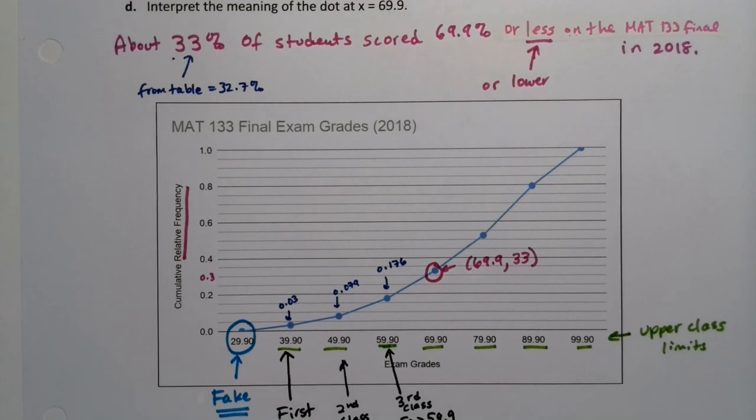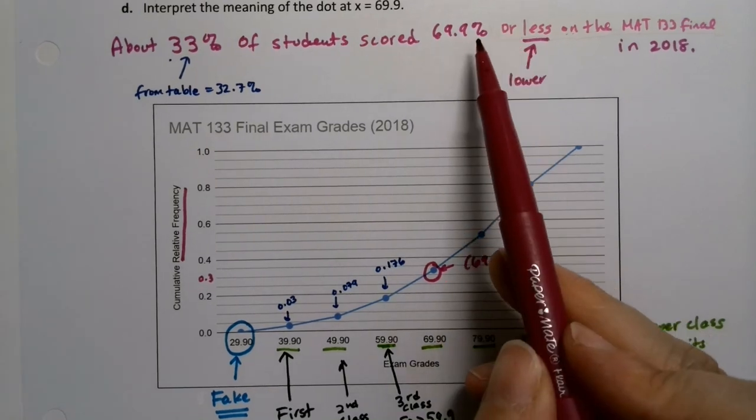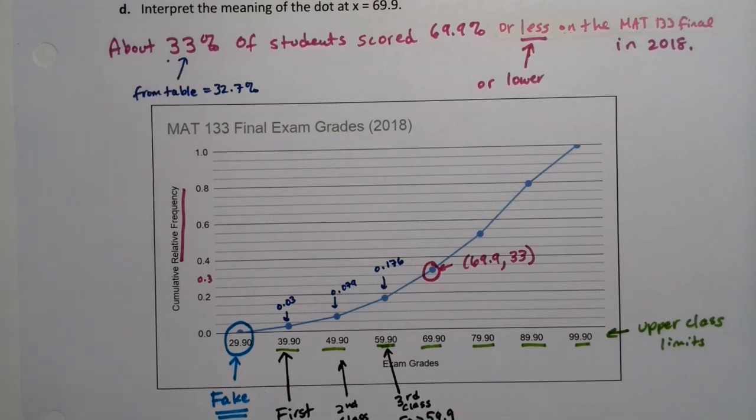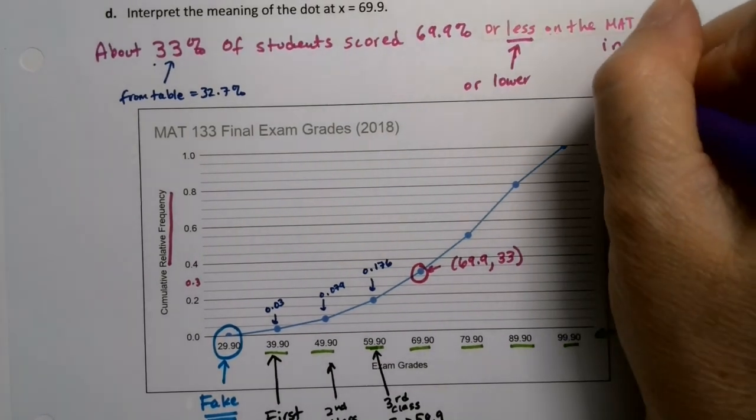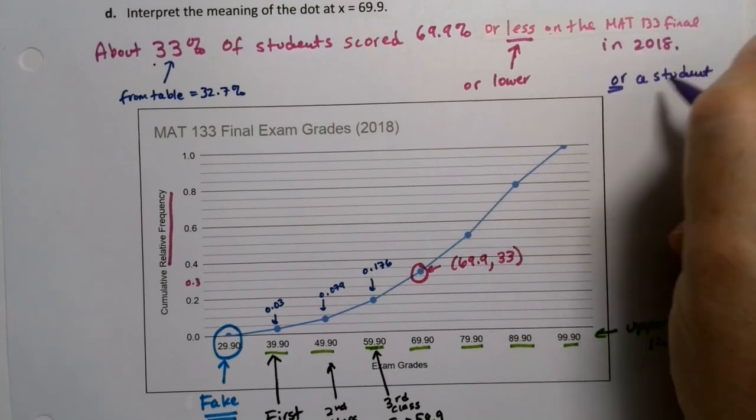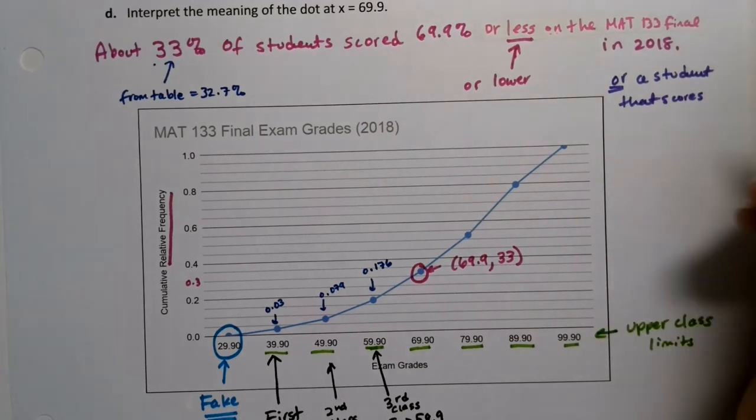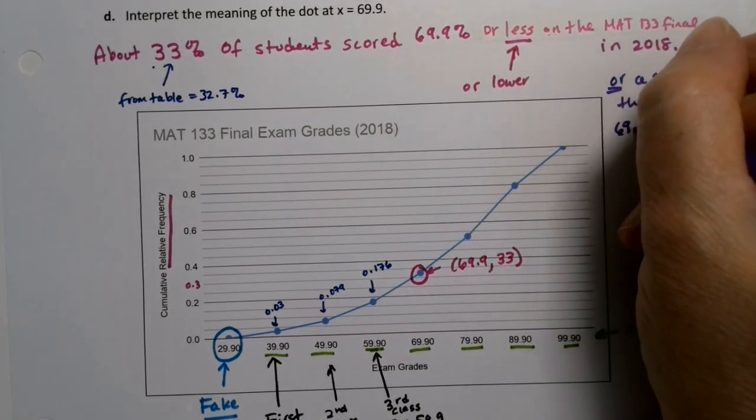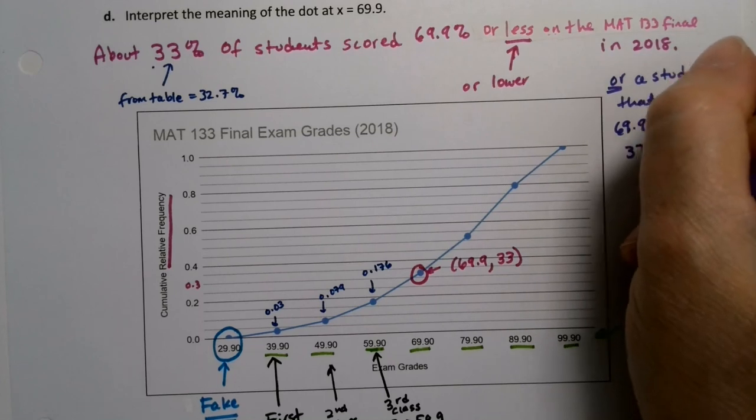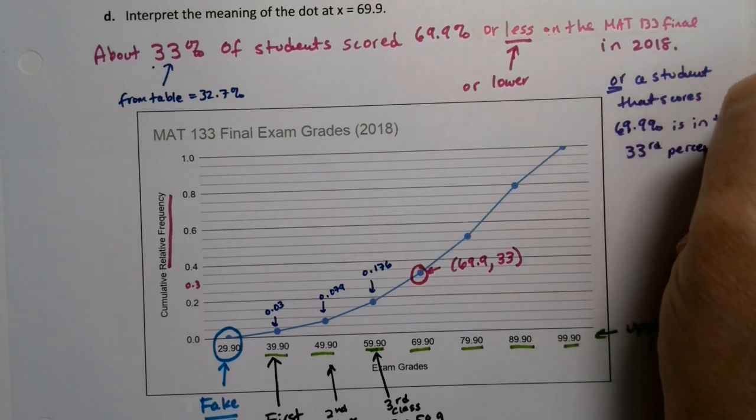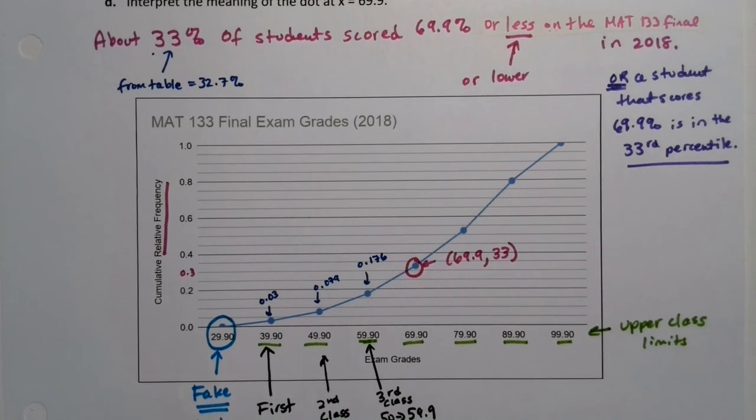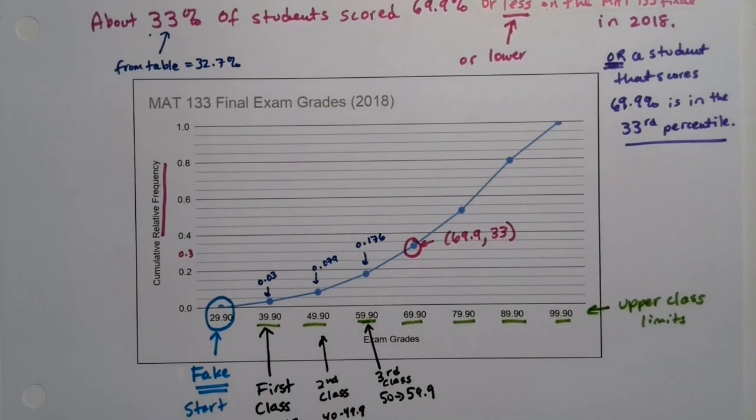If you want to think of it in terms of percentiles, you could say if you score to 69.9, you're in the 33rd percentile, right? 33% of students are at or below your score. So that would be, we haven't quite learned percentiles, but if you want another interpretation. A student that scores 69.9% is in the 33rd percentile. Percentile, which means 33% of students scored at or below their value. So that's another way to interpret it. That's what percentiles mean. Percentile is the percentage that is below your score.